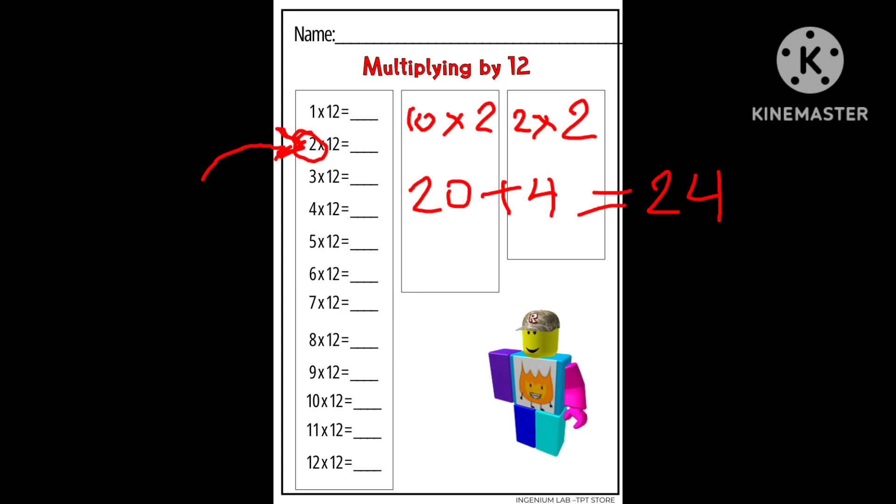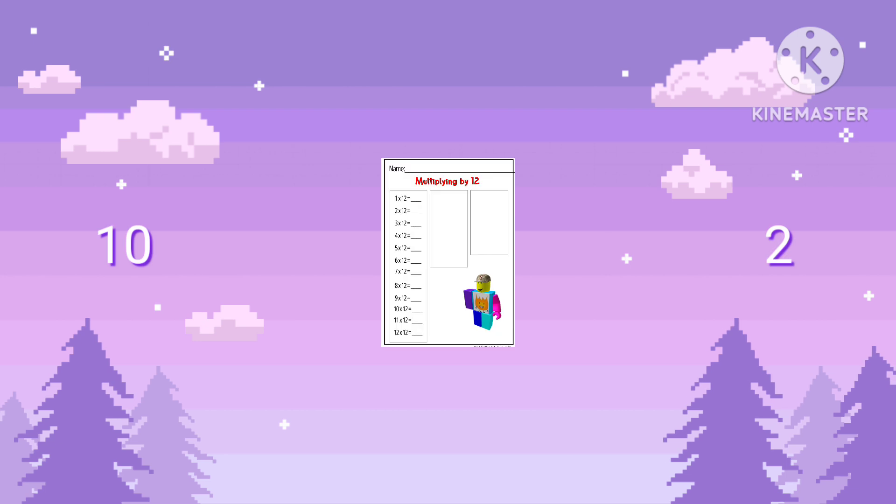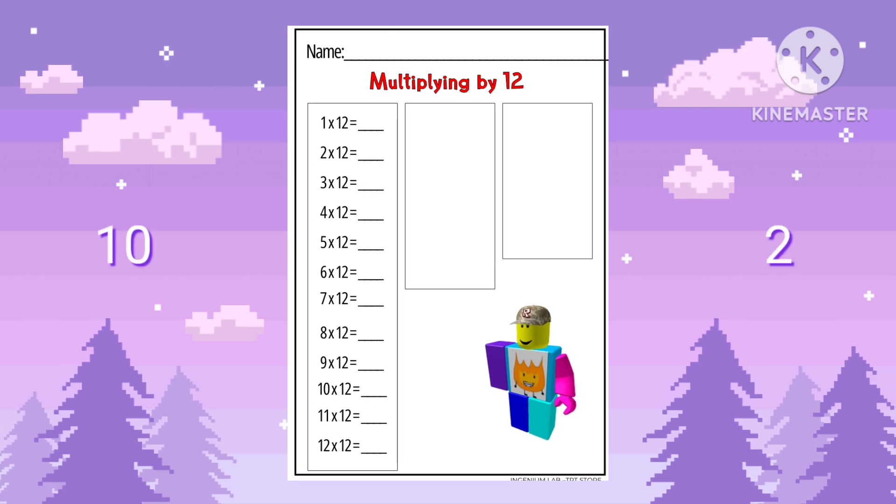Next, let's do 2 times 12. We'll split it up to 10 times 2 and 2 times 2. That gives us 24. If you don't remember how to do times 10 or times 2, I recommend reviewing the previous videos.